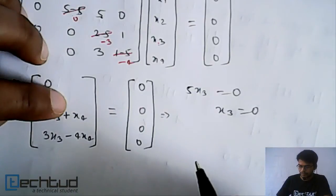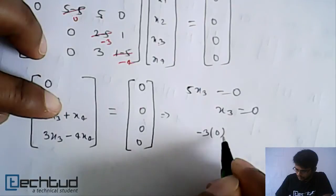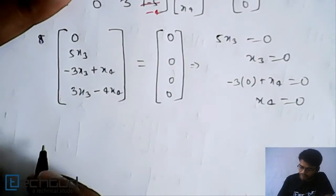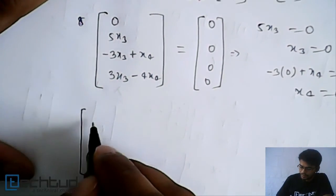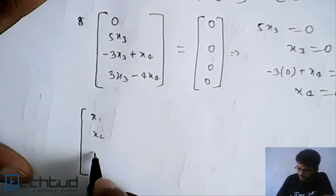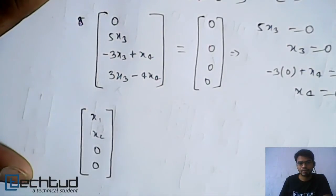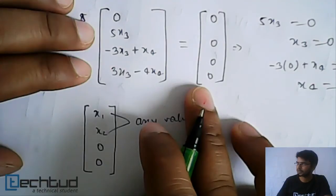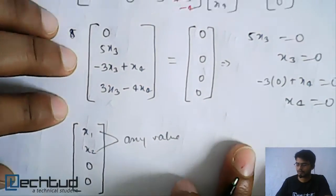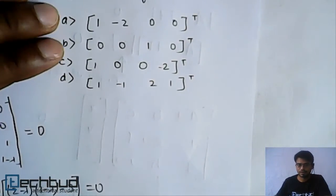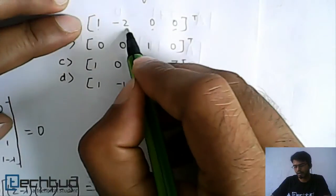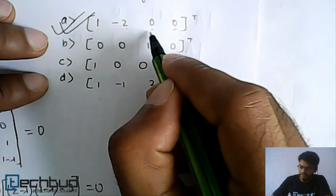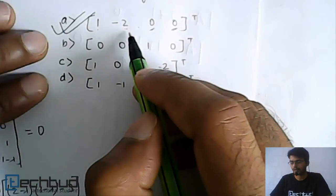We have got x3 = 0 and x4 = 0. In this eigenvector, x1 and x2 may be anything, but x3 and x4 will be 0. This is our solution — x1 and x2 can be any value because this part of the vector is entirely independent. Checking the options: one option says x3 = x4 = 0 with values 1 and minus 2, so that is one of the correct options.